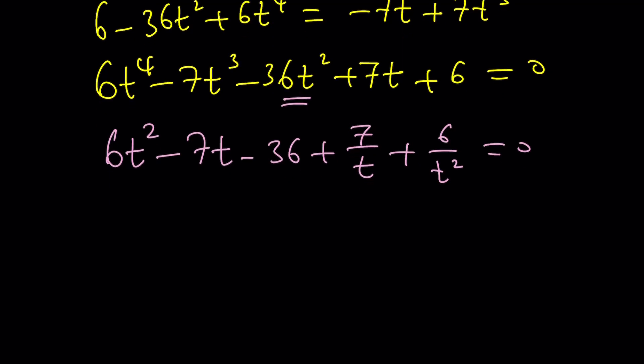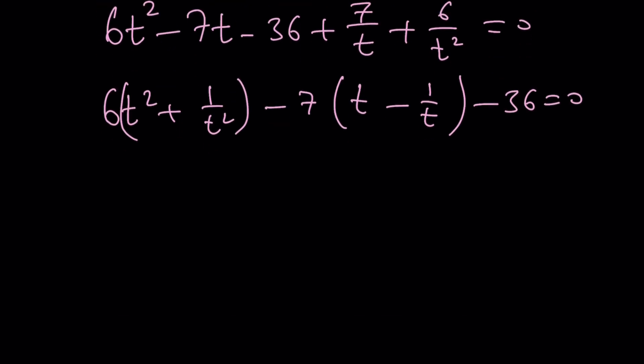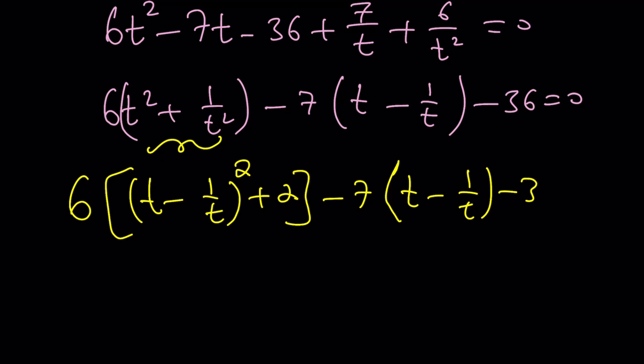you're going to get 6T squared minus 7T minus 36 plus 7 over T plus 6 over T squared equals 0. And then put these two together. Now we're going to do a little bit of focus-focus. This is T minus 1 over T squared plus 2, because there's going to be 2 that's coming up in the middle, minus 2T times 1 over T. And then you just have to add 2 to it to make it sum of 2 squares. And now here comes the beautiful substitution.